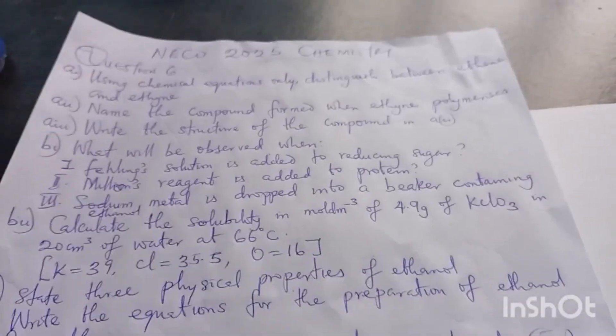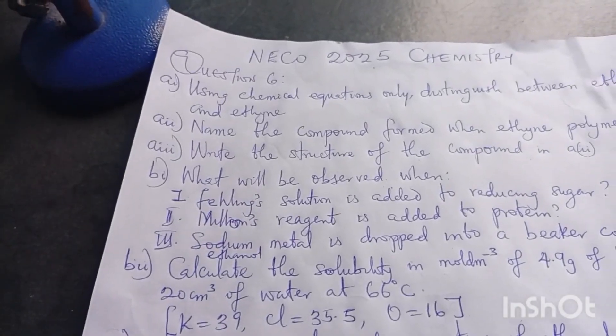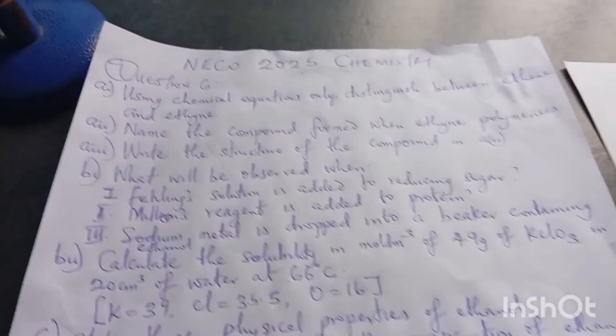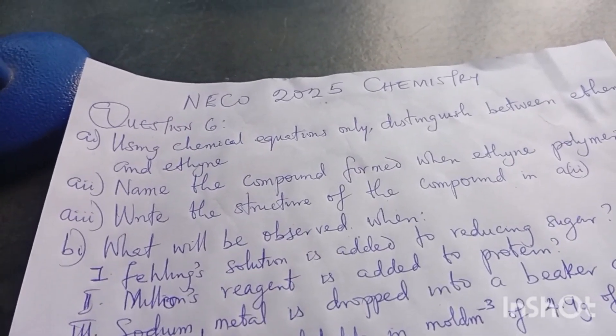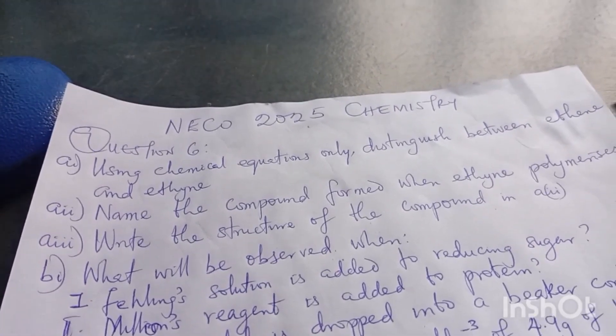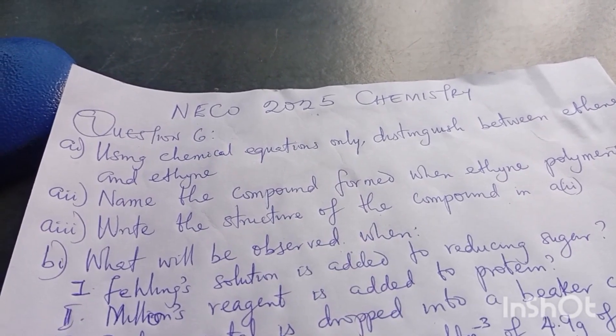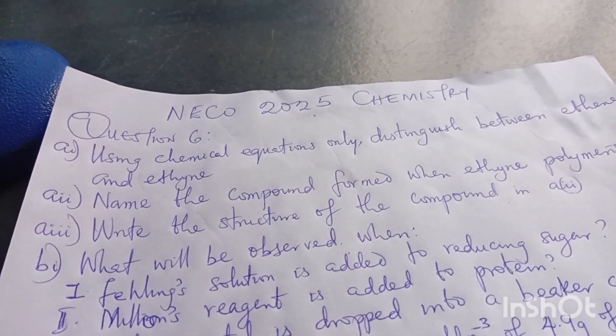You can see the paper I want to be using to solve the questions. We are starting from Question 6 and solving all the possible questions. The first question says: using chemical equations only, distinguish between ethene and ethyne.